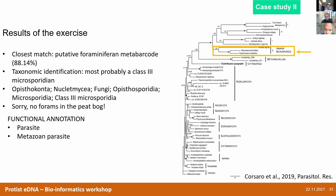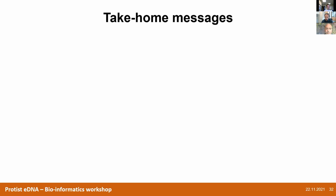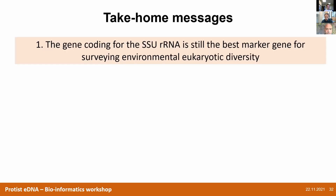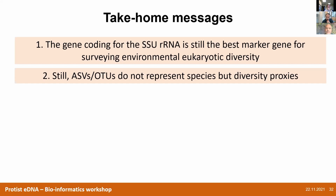These were a couple of examples. Let me provide take-home messages. The gene coding for the SSU RNA is still the best marker gene for surveying the whole diversity of environmental eukaryotes. If you're interested in specific groups, you might go for specific genes. ASVs and OTUs don't represent the exact species composition — you can interpret them as a diversity proxy. When we observe natural phenomena, we're always looking through biased glasses. As far as we acknowledge that these biases exist, then you're fine. The issue comes when you're not aware of them.